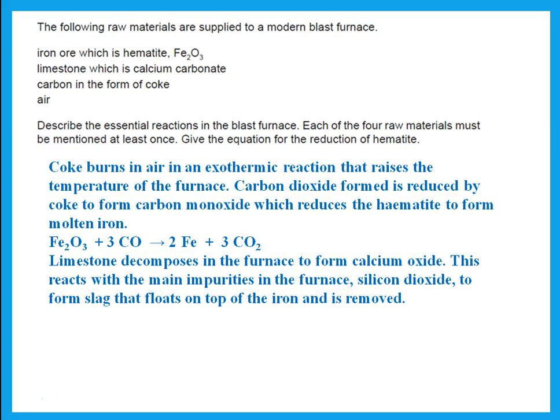A typical answer: the coke burns in air in an exothermic reaction that raises the temperature of the furnace. The carbon dioxide formed is reduced by coke to form carbon monoxide, which reduces hematite to form molten iron — this is the equation for the reduction of hematite. Then limestone decomposes in the furnace to form calcium oxide; this reacts with the main impurity silicon dioxide to form slag that floats on top of the iron and is removed.